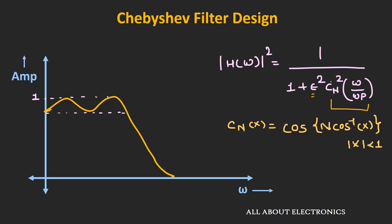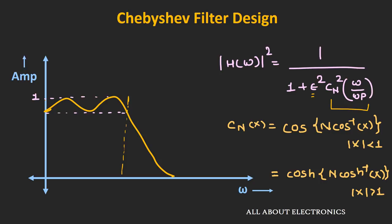This polynomial is normalized with respect to the passband cutoff frequency ωp. For frequencies less than ωp, the function has a periodic behavior. For frequencies beyond the passband cutoff frequency ωp, the expression shows monotonic behavior — as you go beyond ωp, the response becomes monotonically decreasing.